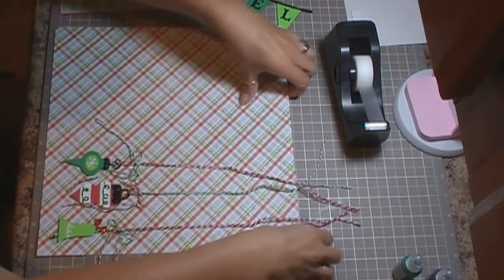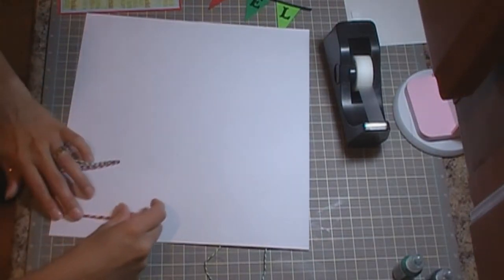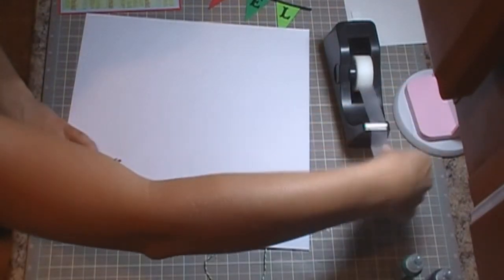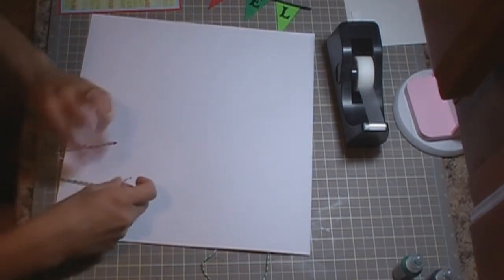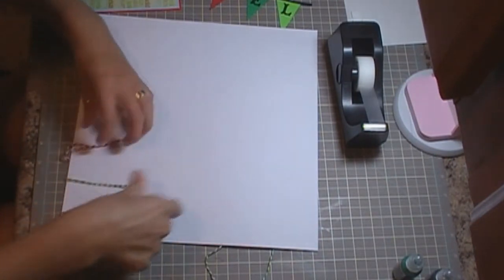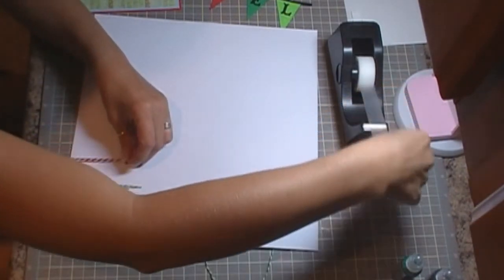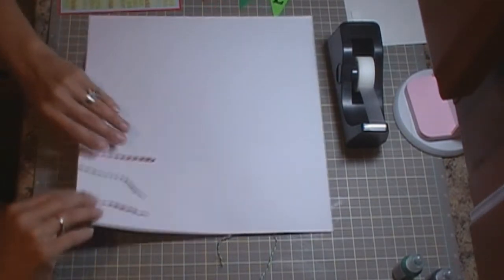So then what we're going to do is we're going to flip it over and we're going to attach all of our twine in the back, just to kind of hold it all in place. And I use red and then green and then red. And then for the bows, I use the opposite color. So if the twine is red for this piece, then I use green for the bow.